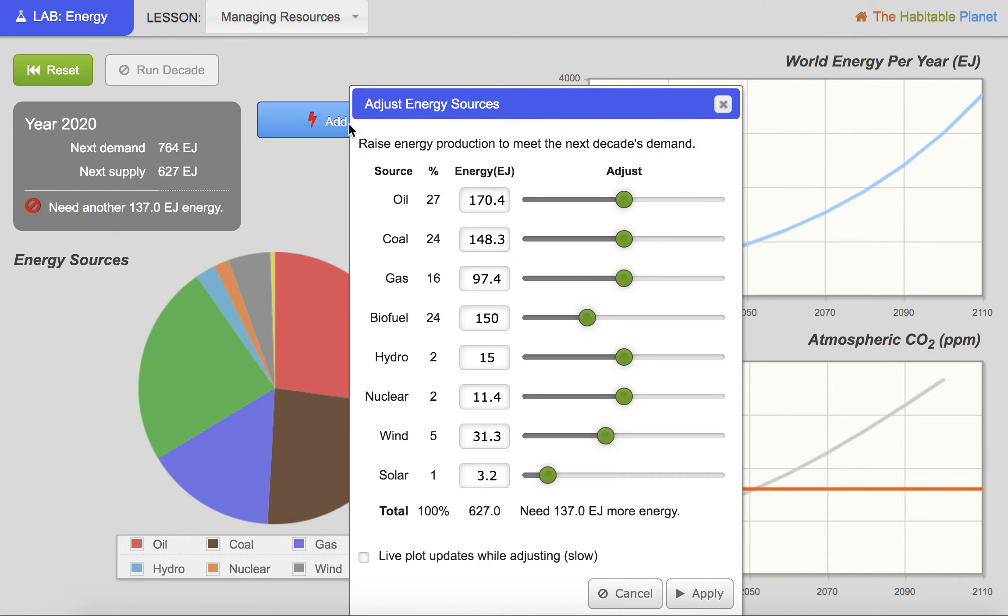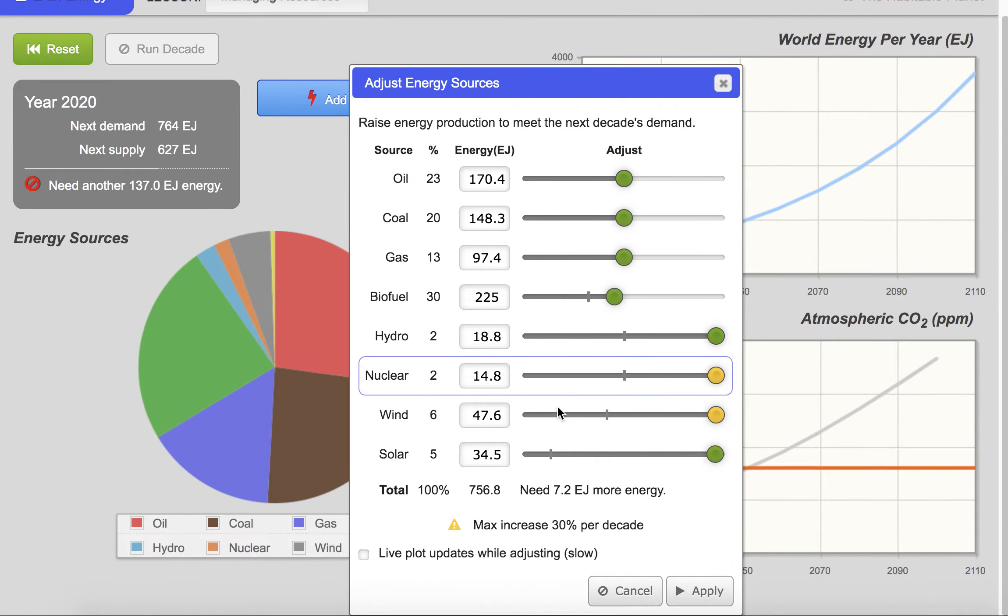So I'm going to add energy again. Now you can see I need to create a little bit more energy than I did before. So I'm going to adjust some of these sliders. I still need to adjust some more. This time I'm not going to be as careful because I'm just showing you how this works. I'm going to click apply.